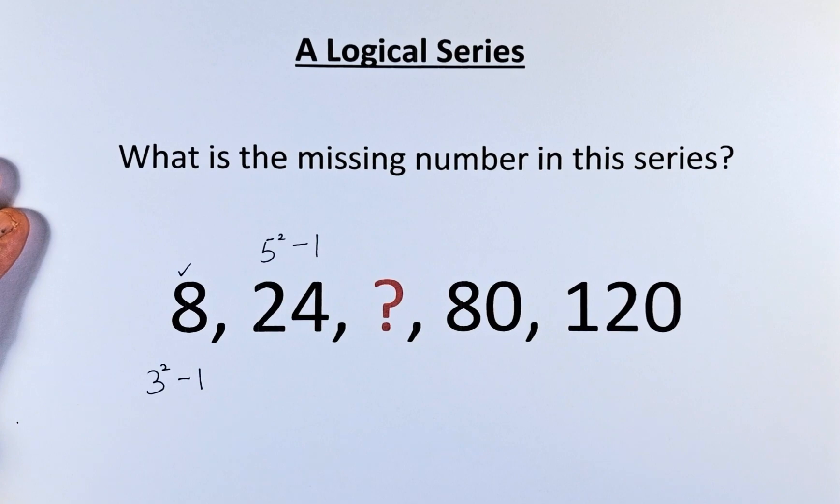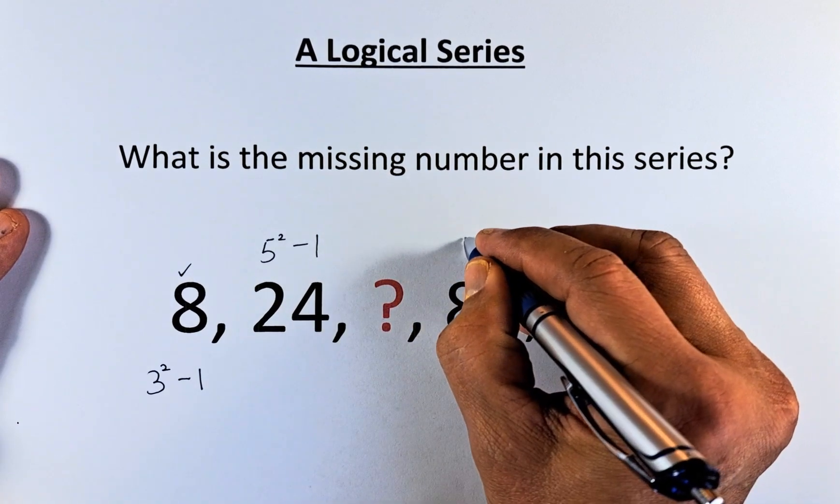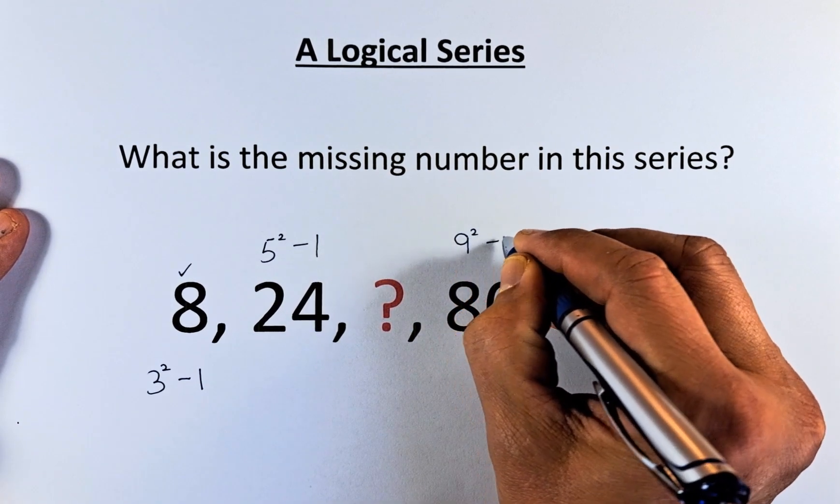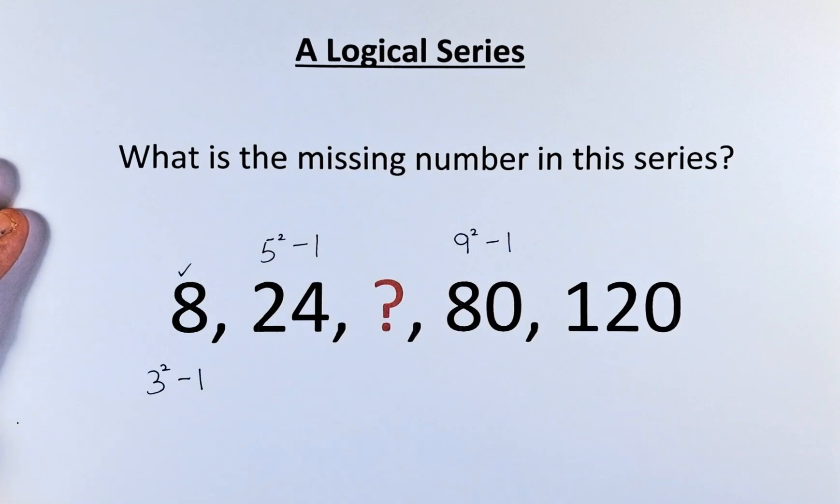What about 80? 80 is going to be 9 squared minus 1. 9 squared is 81. 81 minus 1, that will give us 80.